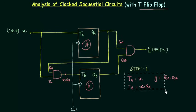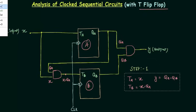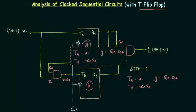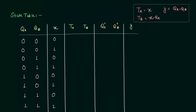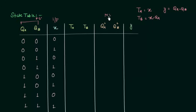Now that we have the input and output equations, we can move to the state table. I will copy these equations and drag them to the state table so that we can use them. You can see these two are my present state, one input X, and the next states are QA+ and QB+. The goal of this state table is to find out the next state and the output, and to find out the next state we must know the values of TA and TB. I will first start with TA, which will help me find out the next state of flip-flop A, that is QA+.